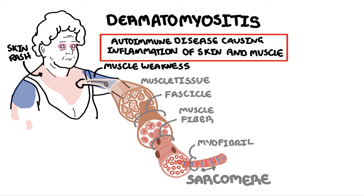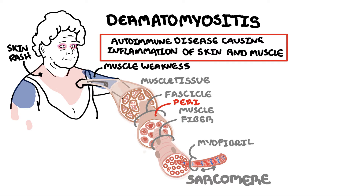Let's focus on the pathophysiology of dermatomyositis. The sequence of events that actually cause the immune system to cause inflammation of the muscle is not completely understood. However, there is likely an inappropriate activation of complement proteins targeting the perimysium, the layer surrounding a muscle fascicle.